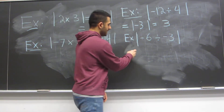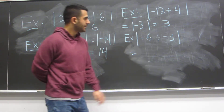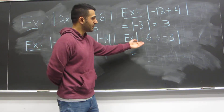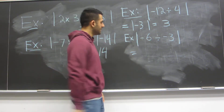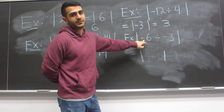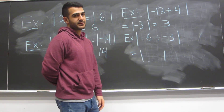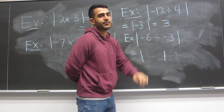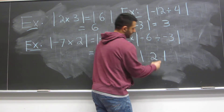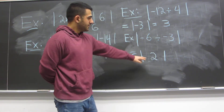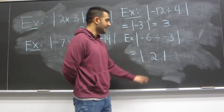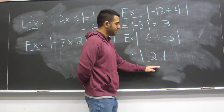Let's do the last division example. We can simplify since we have a division we know how to do. What is negative 6 divided by negative 3? That would be 2. We can't simplify any further, so we take the absolute value of 2, which is 2.